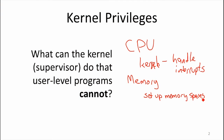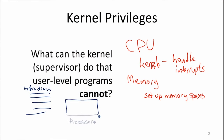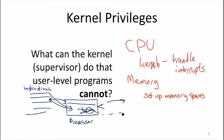If we want the kernel to have privileges that a regular program doesn't, what do we need to do in the processor? What happens when a user-level program tries to do something it shouldn't? We saw an example last class: when a user-level program tries to read part of memory it's not allowed to, the processor will not allow that — it gives a fault instead, jumping into the kernel to handle it, and eventually the user program crashes.